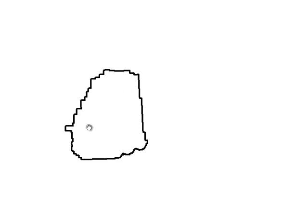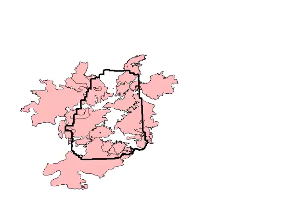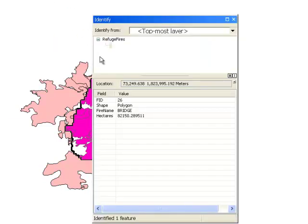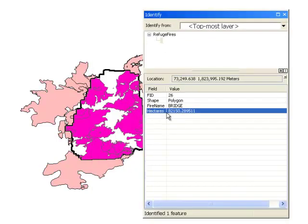The third problem will be an intersection problem. You'll have the Kanuti National Wildlife Refuge boundary as a polygon and Alaska wildfire polygons. Use the intersection function to cut out all the fire polygons inside the Kanuti National Wildlife Refuge. Then for each polygon inside the refuge, calculate the area in hectares and output that to a shapefile. The resulting polygon shapefile will have a field named hectares, and for each polygon we recalculate the area in hectares inside the refuge.